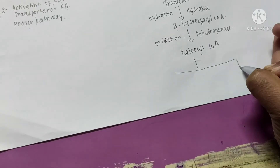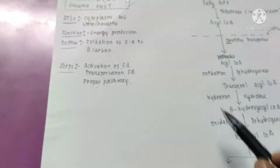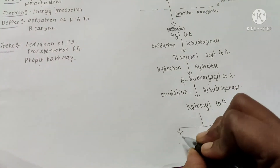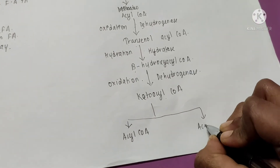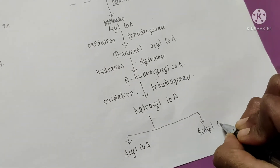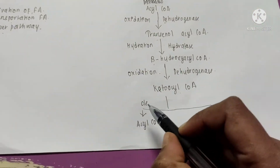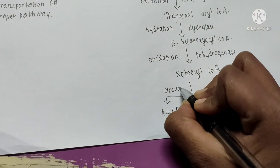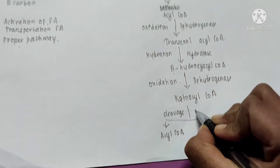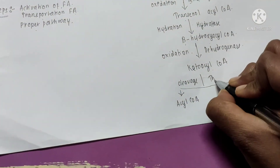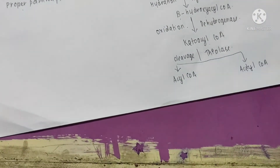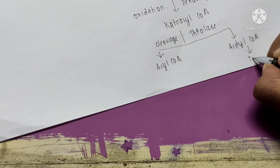The next step gives us A² — two products: acyl CoA and acetyl CoA. This step is known as cleavage, or breaking down. The enzyme comes from T in our mnemonic, which is thiolase. Thiolase cleaves keto acyl CoA into acyl CoA and acetyl CoA.